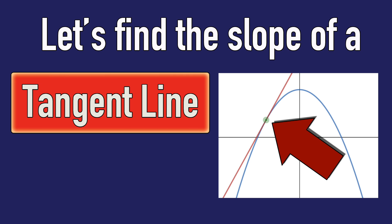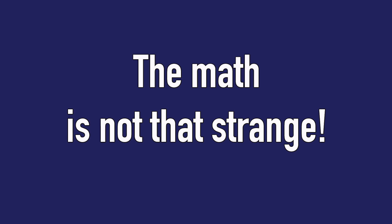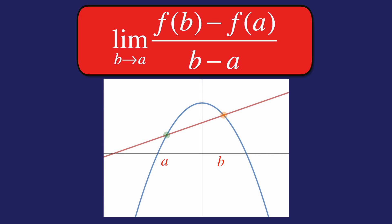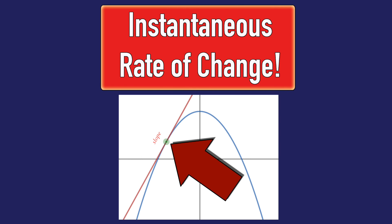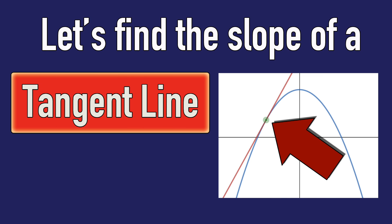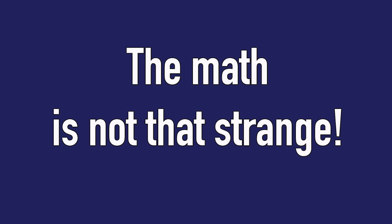The average rate of change — on the slope of a tangent line. The math is not that strange. Instantaneous rate of change, instantaneous rate of change. Look at the average rate of change as b goes to a. It's the instantaneous rate of change.